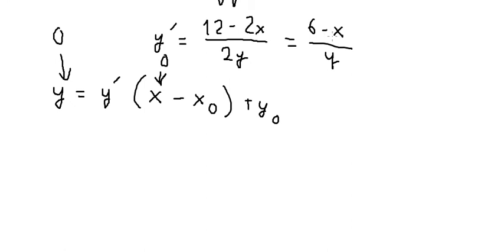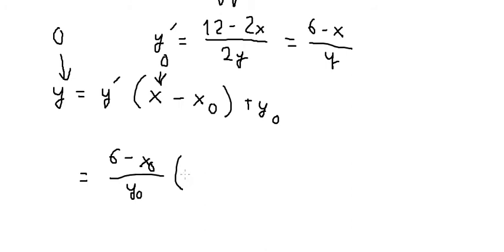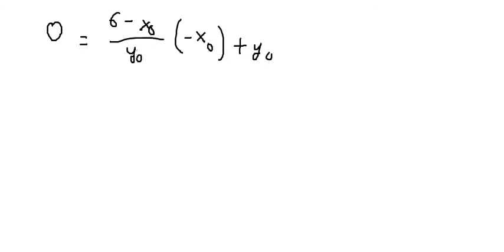So we have (6 minus x-naught) over y-naught as our slope. We substitute it in: (6 minus x-naught) over y-naught, multiplied by (x minus x-naught), plus y-naught equals zero. Then we multiply both sides by y-naught.